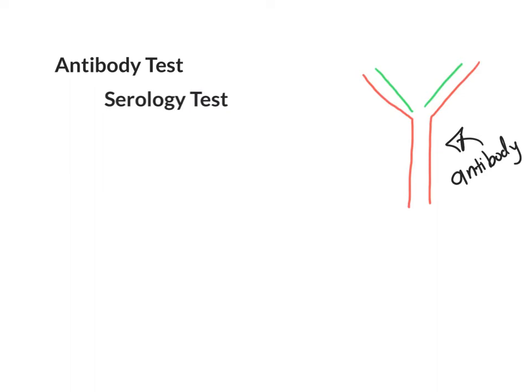Briefly, an antibody is made by the body when it comes into contact with an antigen, which is a foreign particle. This means when you are sick, either with a virus or a bacteria, the body can eventually make antibodies against it when your immune system kicks in. This allows your body to clear the infection faster the next time it comes around and builds up some immunity against it.